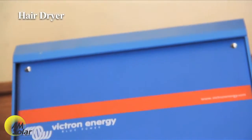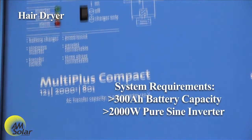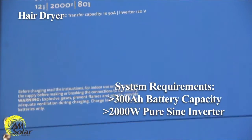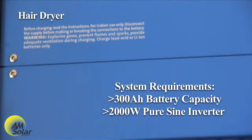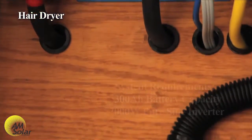Hairdryers consume about 1,500 watts and run for about 10 minutes per day. I don't recommend anything less than a 2,000 watt inverter and a 300 amp hour battery bank for a hair dryer. If having dry hair is super important to you, you're going to need about 90 watts of solar to offset the consumption of your hair dryer.